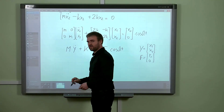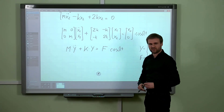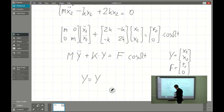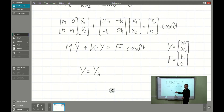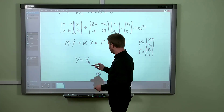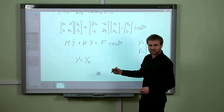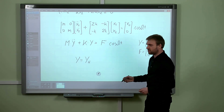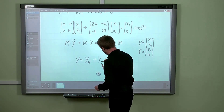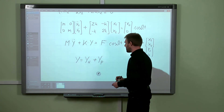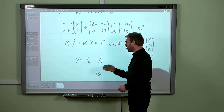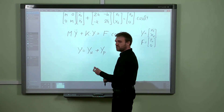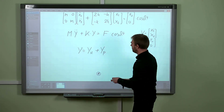We know that for a non-homogeneous system of linear equations, the general solution is the composition of the general solution of the homogeneous equation — which we covered in the previous video on free and damped vibration of the multi-degree-of-freedom system — plus the particular solution, which represents the dynamic response to the excitation. Today we will be dealing with the particular solution.